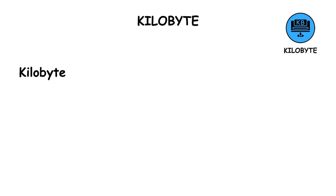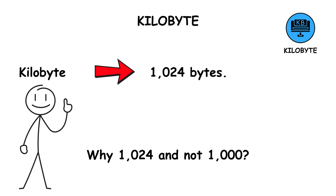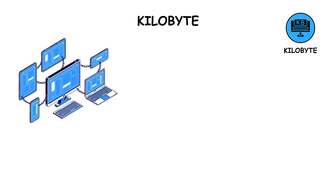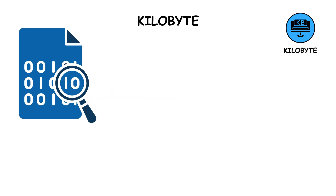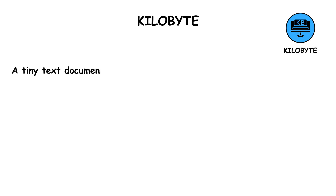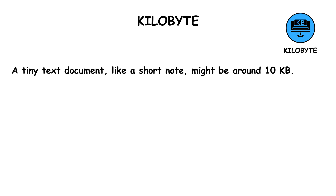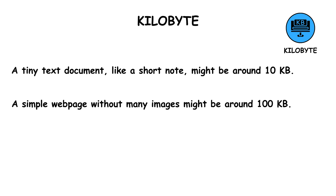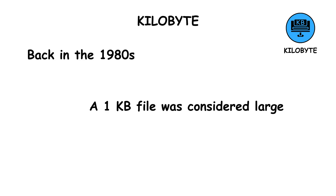A kilobyte is 1,024 bytes. Why 1,024 and not 1,000? Because computers operate in binary, not decimal. Binary works in powers of two, so two to the power of 10 equals 1,024. That's why digital storage is always just a bit over what you might expect. To put it simply, a tiny text document, like a short note, might be around 10 kilobytes. A simple web page without many images might be around 100 kilobytes. Back in the 1980s, a 1 kilobyte file was considered large. Now, it's almost nothing.